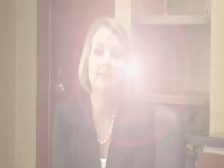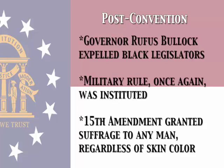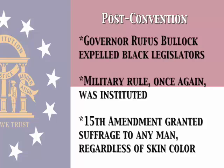This constitutional convention adjourned in March of 1868 and then it went to the voters in April and was approved. These gains for former slaves were certainly short-lived with the election of Governor Rufus Bullock in 1868. He expelled all of the black legislators that were in the state, and the federal government again responded with military rule and added the requirement of the 15th Amendment, which allowed suffrage for any man regardless of skin color.